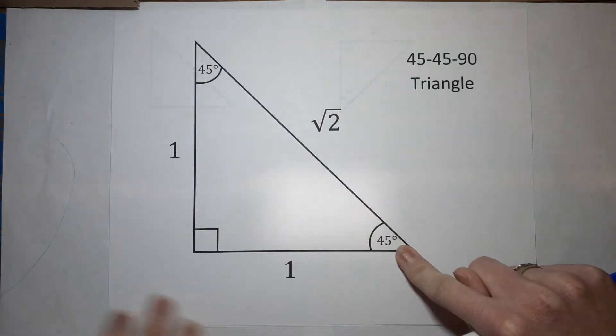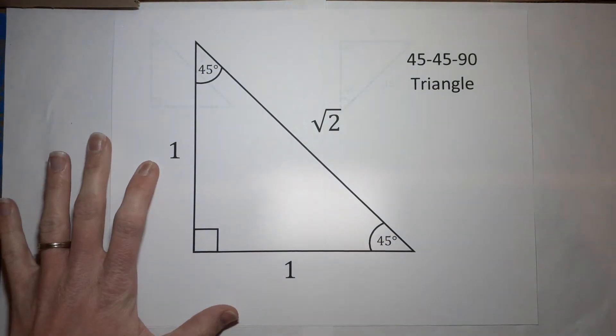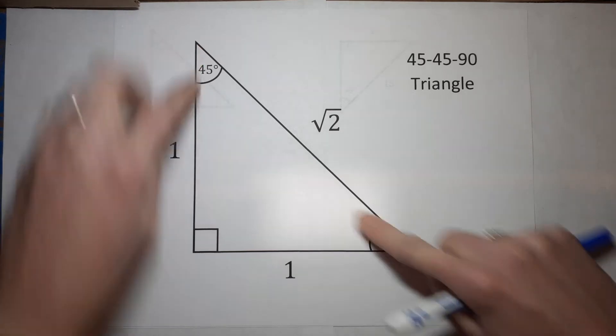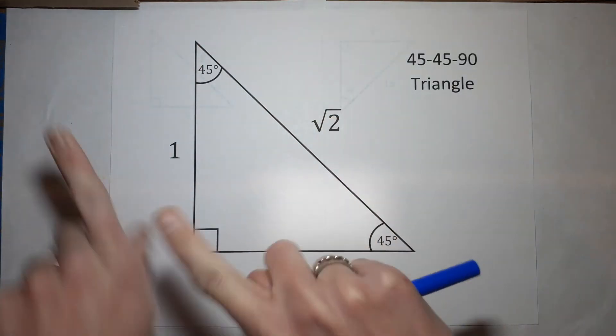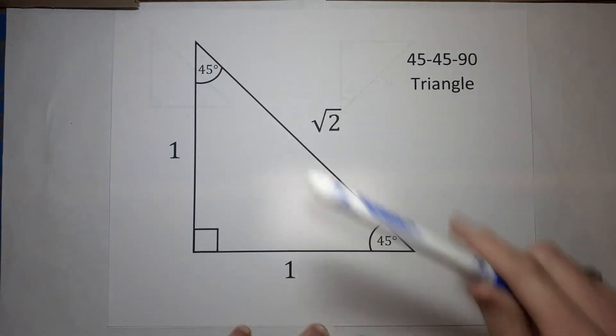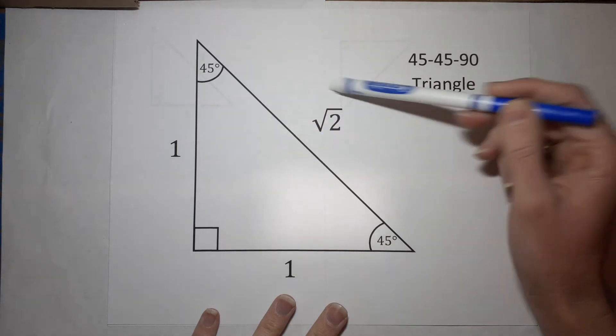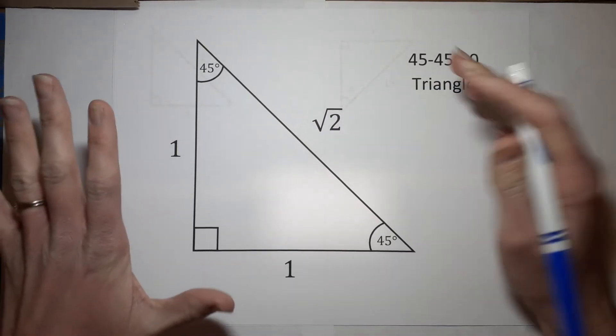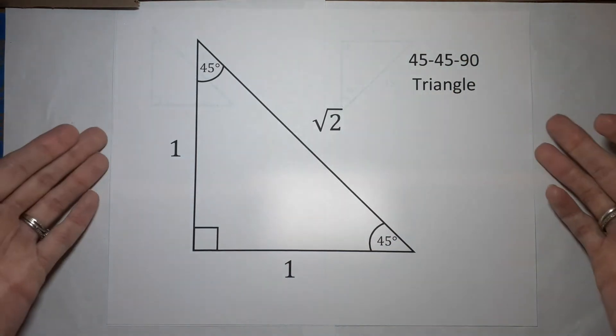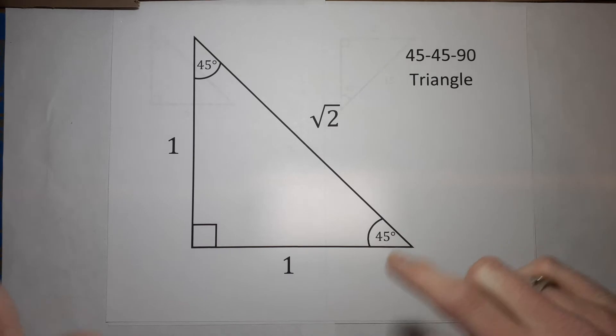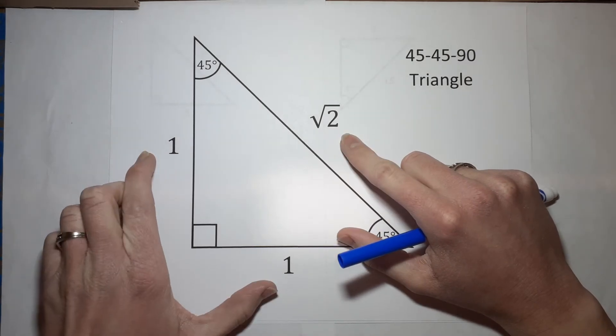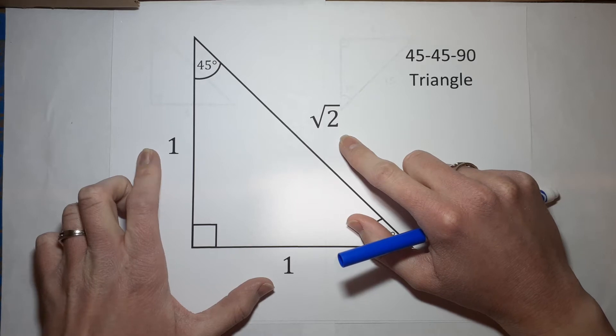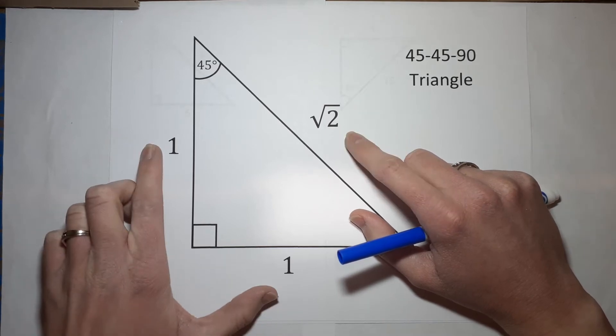What does that mean? The legs are each one. If the angles here are the same, the sides are also the same. The hypotenuse, the one across from the right angle, is the square root of two. Now, what do I mean when I say all 45, 45, 90 triangles are proportional to each other? Well, what I mean is that whatever triangle you have, no matter how big or small it is, is this same relationship. So it might be double this. It might be triple this. It might be half this. It might be 72 fifths this. So it's always going to be related to these.